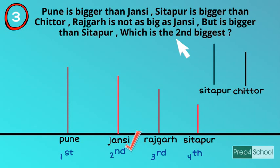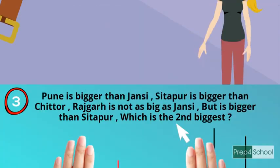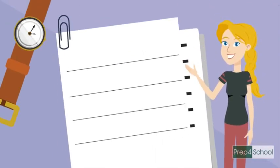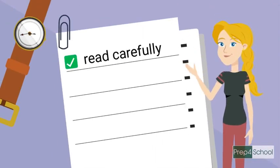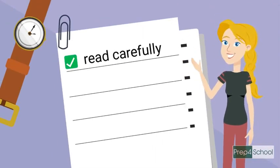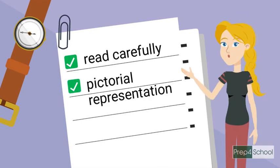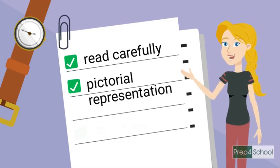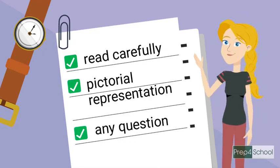These are the basic problems related to ranking based on height or weight. Understand and carefully read each sentence and draw its corresponding diagram, and you can easily do any tough question.